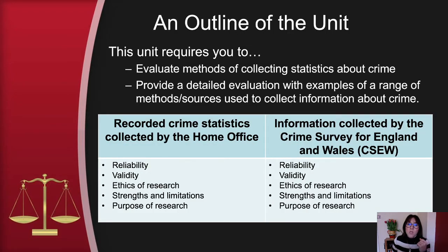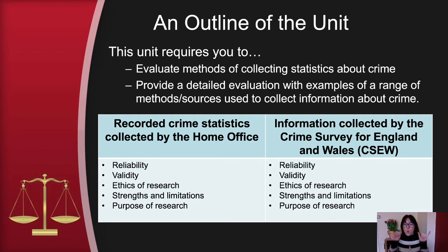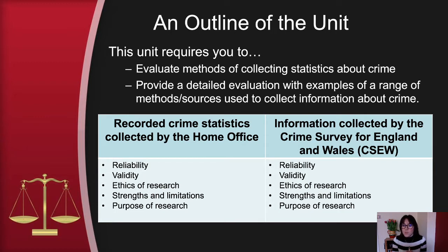You are required to evaluate methods of collecting statistics about crime and provide a detailed evaluation with examples of a range of methods and sources used to collect information about crime. This topic is unique in that you have to look at the strengths and limitations of these different ways. There are two ways of collecting information: the first is the recorded crime statistics collected by the Home Office; the second is the CSEW — the Crime Survey for England and Wales. The first half of this video is on the Home Office; the second half is on the CSEW.